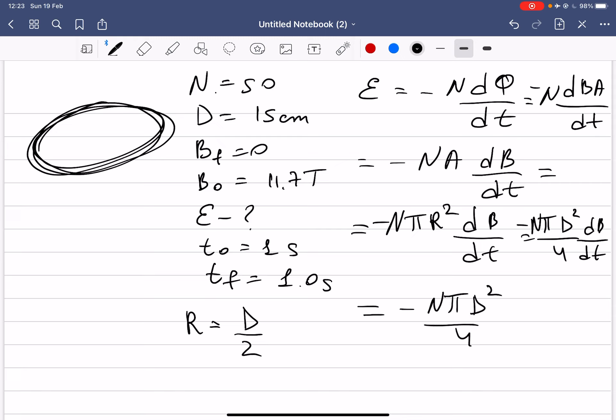Okay, then we finally come to the number of turns π D² over 4. That becomes B final minus B initial, and time final minus time initial. So B initial is 11.7, B final becomes zero, t final is one second, t initial is zero seconds. Okay, so if you plug the numbers you should get the answer.